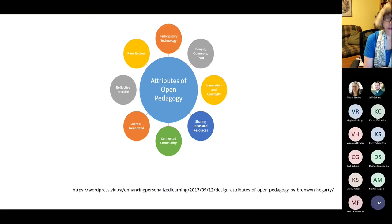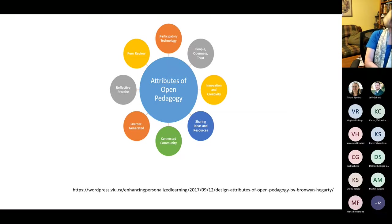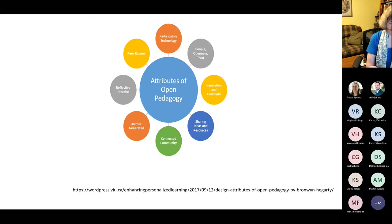Bronwyn Heckerty in 'Attributes of Open Pedagogy: A Model for Using Open Educational Resources' ascribes these attributes to open pedagogy: participatory technology, people, openness and trust, innovation and creativity, sharing ideas and resources, connected community, learner generated, reflective practice, and peer review. In 'Eight Qualities of Open Pedagogy,' Next Thought adds: agency, choice, expansion, student constructed, open-endedness, and unmeasurability — in terms of being dynamic and open as opposed to static and closed.